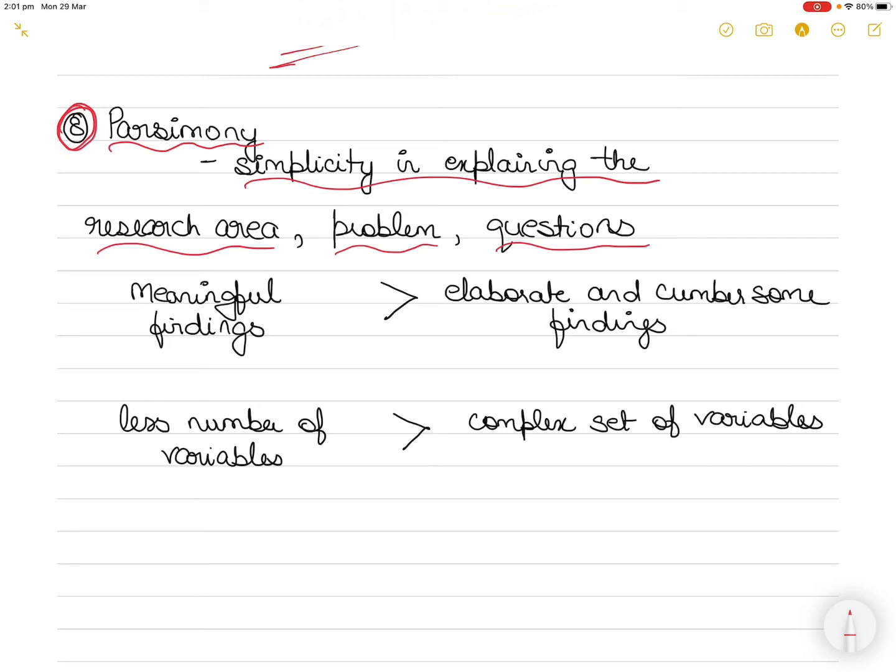Research frameworks that consider an unmanageable number of factors - for example, identifying three specific variables in the workplace which when changed will raise the organizational commitment of employees by 45 percent - would be more valuable to the manager than identifying 10 different variables that increase organizational commitment by let's say 48 percent.